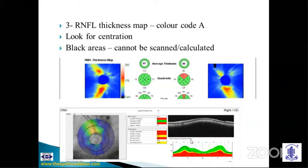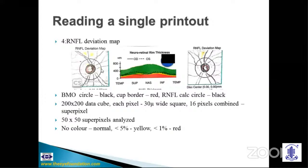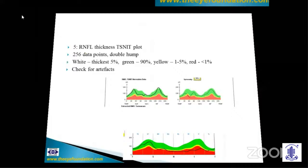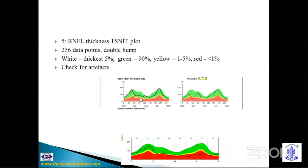Ganglion cell analysis is a 6x6 millimeter macular cube centered on the fovea — the Avanti uses a 7x7 millimeter cube. This provides a combined analysis of the optic nerve head alongside the macular GCC. There is a central hole in the ganglion cell map because the foveola is devoid of any ganglion cells. The same color code B applies: yellow is borderline and red is abnormal. In the TSNIT graph, there are 256 data points; this dip showing two peaks could represent a split RNFL — go back to the RNFL thickness map to verify. A dip into the red region may not necessarily be abnormal.